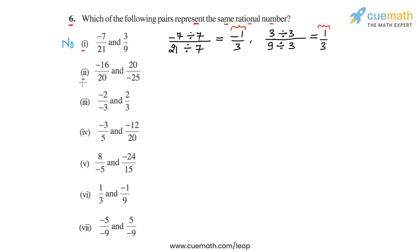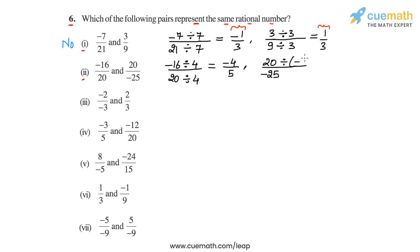In part 2, we have -16/20 and 20/-25. For -16/20, the HCF of 16 and 20 is 4, so dividing by 4 gives -4/5. For 20/-25, the HCF of 20 and 25 is 5, but we divide by -5 to make the denominator positive, giving -4/5. Both standard forms are -4/5, so this pair represents the same rational number. The answer is yes for part 2.